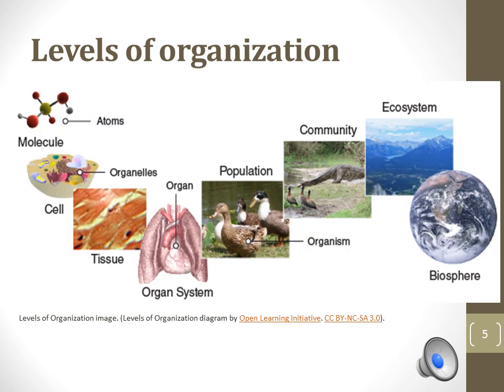This diagram shows representative examples of each of the different levels of organization. Atoms can combine to form different types of molecules, like fats, sugars, and proteins. Those molecules come together to form cells, the basic unit of life. In multicellular organisms, like plants and animals, similar cells may work together in tissues to perform a particular function. Organs, such as the lung, are composed of different types of tissues that work together to perform particular tasks. The lungs are responsible for gathering oxygen and expelling carbon dioxide.